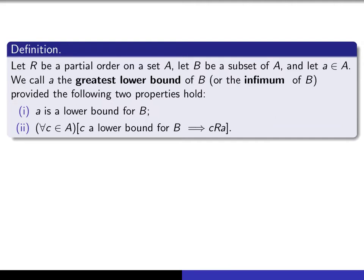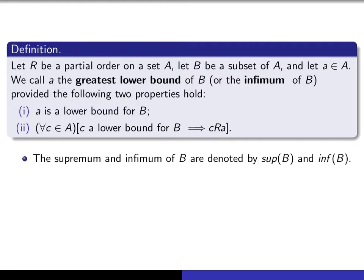We can similarly define what we mean by greatest lower bound. We have a partial order on a set A, B is a subset of A, and A is an element of A. We call A the greatest lower bound of B, or we also refer to it as the infimum of B, provided: first, it is a lower bound for B — in other words, it's less than or equal to everything in B — and secondly, it's greater than or equal to any other lower bound of B. So it's the greatest of all of the possible lower bounds for B.